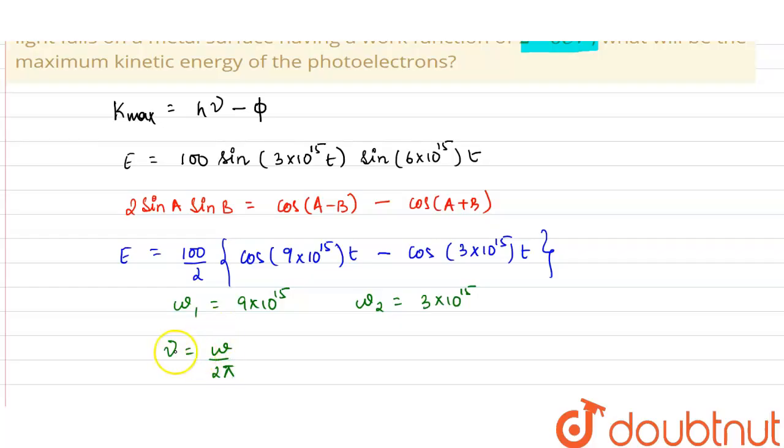So the frequency must be maximum, so to get the maximum frequency we will use the maximum omega. So what we get from here is our frequency comes out to be 9 into 10 raised by 15 divided by 2 pi.